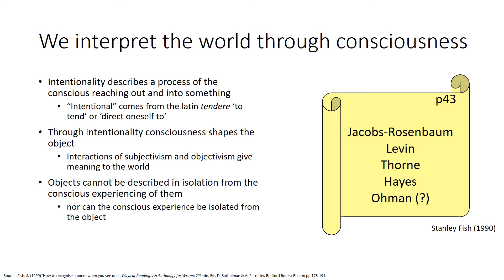Even to see something as a list, you must already have conscious knowledge of what a list is — hierarchy, seriality, these sorts of things. Your mind, your consciousness, is already shaped, and you look at things and interpret them and place meaning upon them, often based on other information you're given.